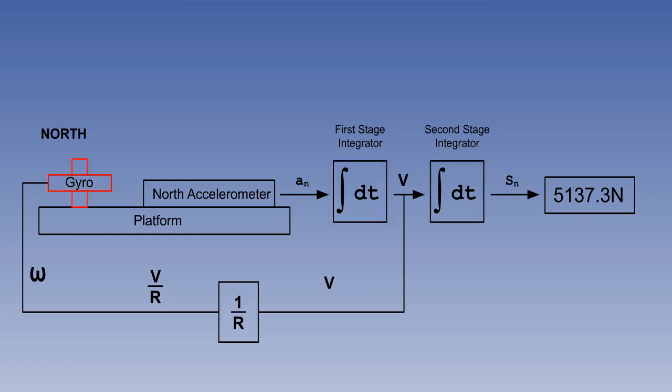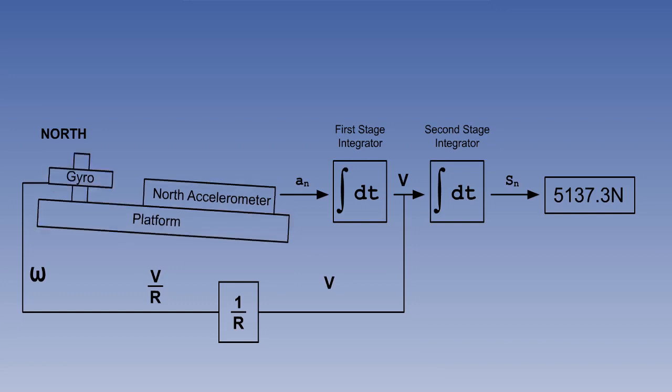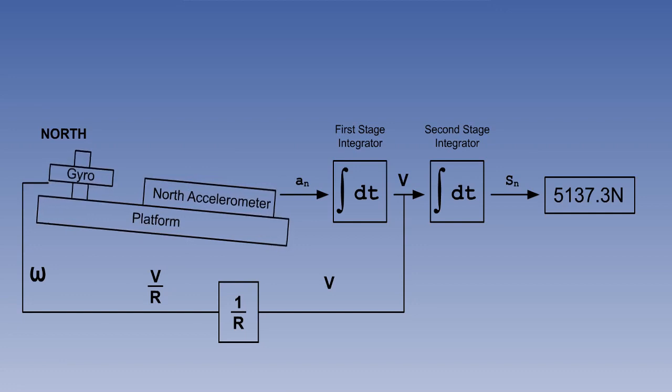The next error to consider is leveling gyro topple. We said that the platform and gyro might not be initially perfectly level. However, the gyro may also topple from its start position. With the accuracy to be expected of INS quality gyros, the topple rate would be of the order of only one-hundredth of a degree per hour. But nevertheless, it is finite and would have an effect on the output.